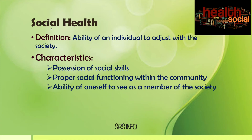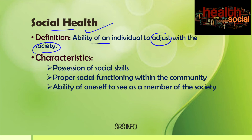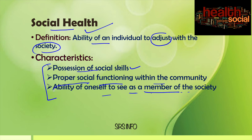Next is social health. Social health can be defined as the ability of an individual to adjust with other society in a natural and productive way. The characteristics of social health include possession of social skills, proper social functioning within the community, and regularly interacting with our community in a positive and productive way — having the ability to see oneself as a member of society.